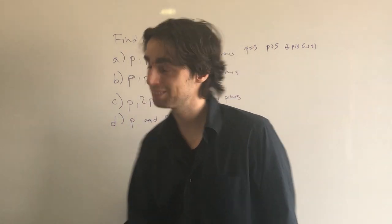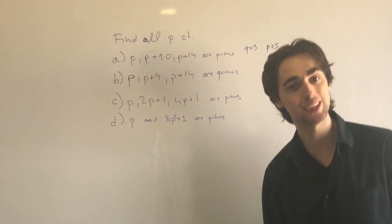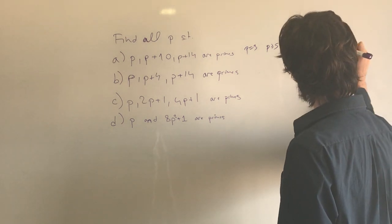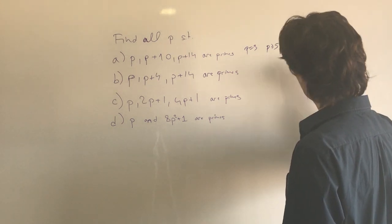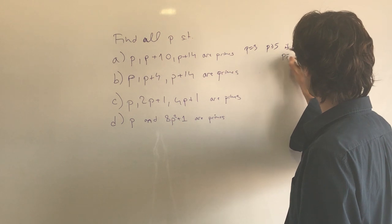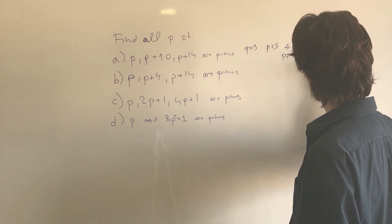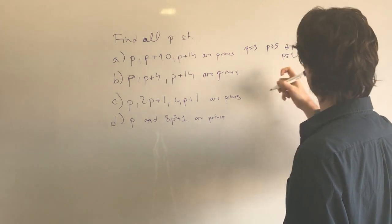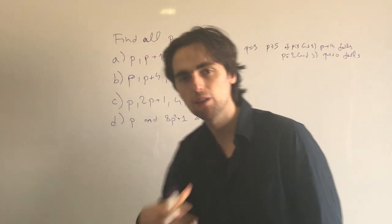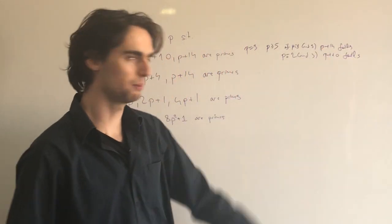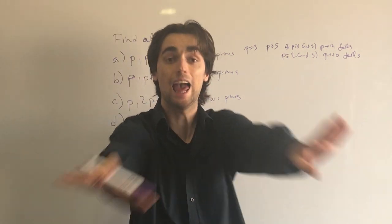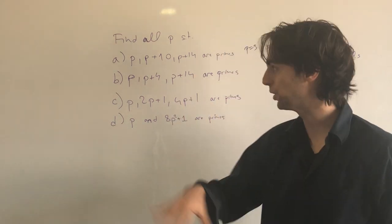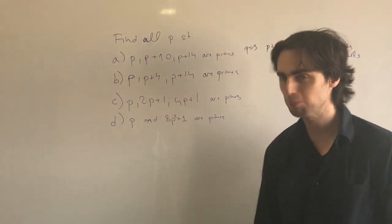If P is congruent to 1 modulo 3, then P plus 14 is congruent to 1 plus 14 = 15, which is 0 modulo 3 — so P plus 14 is divisible by 3 and is greater than 3, so it's not prime. If P is congruent to 2 modulo 3, then P plus 10 is congruent to 2 plus 10 = 12, which is 0 modulo 3 — so P plus 10 fails. This solves part A.